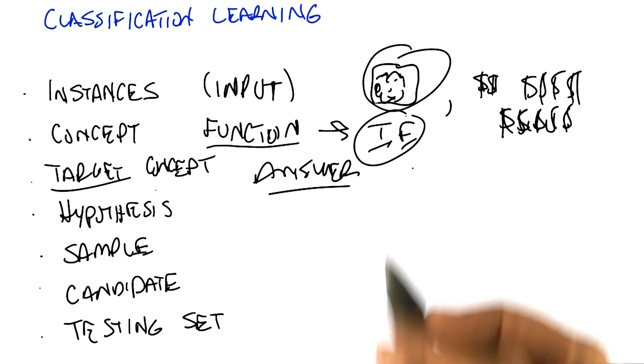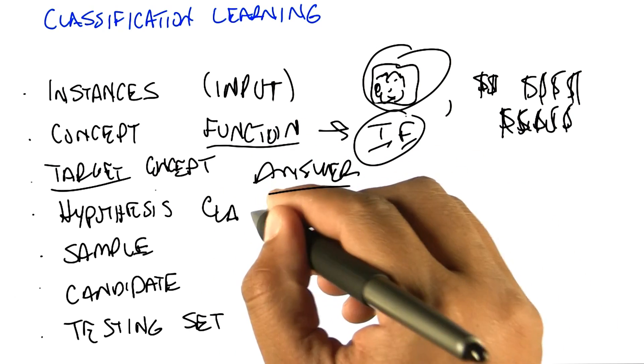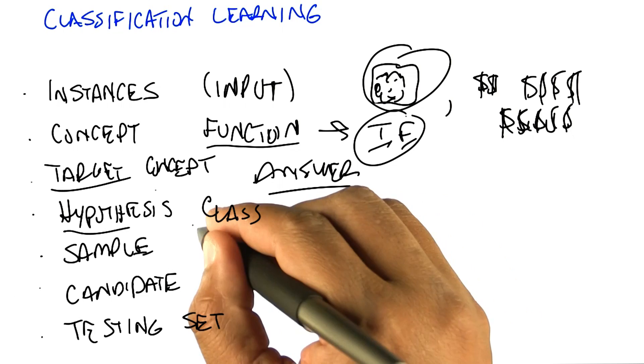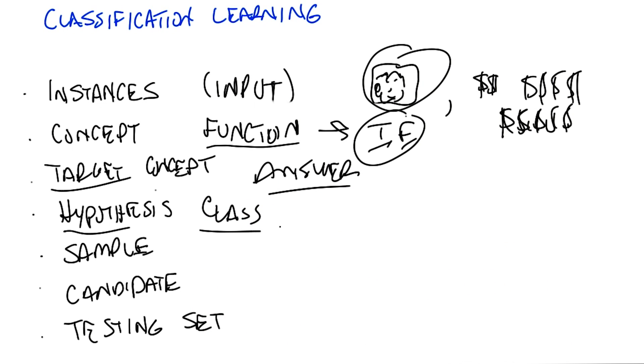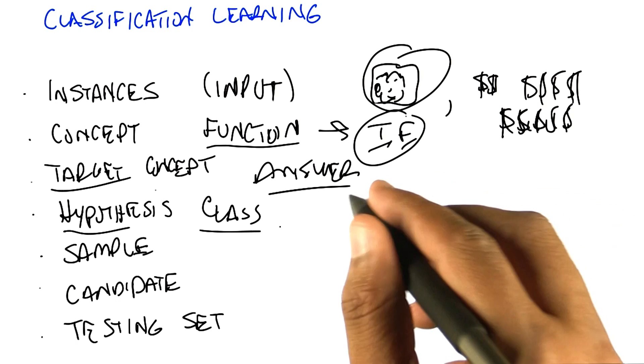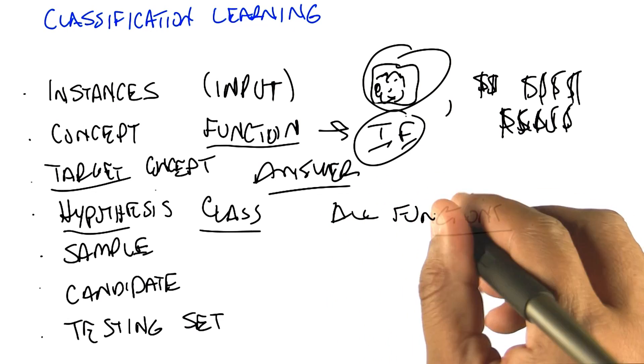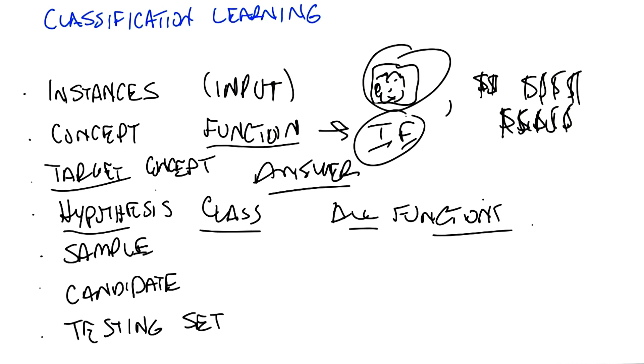So that's where the hypothesis comes in. In fact, I think it's better to say hypothesis class. That's the set of all concepts that you're willing to entertain. So it's all the functions I'm willing to think about. So why wouldn't it just be all possible functions? It could be all possible functions, and that's a perfectly reasonable hypothesis class.